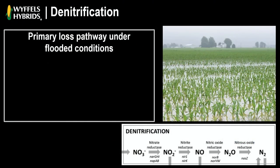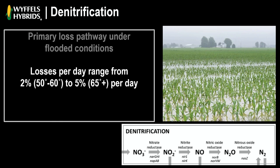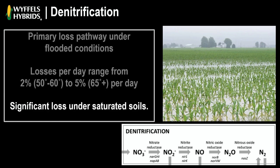Second: denitrification. This is the primary loss pathway under flooded conditions. It is very dependent on temperature, and losses per day can range from two to five percent — with two percent occurring in the 50 to 60 degree range, and five percent or greater losses per day at 65 degrees plus.